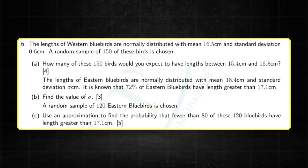Finally, you have the normal distribution question, question number six. Parts A and B are pretty common concepts under this topic, and then we finish off with a five-mark approximation question, just like in February-March.